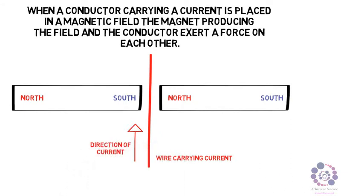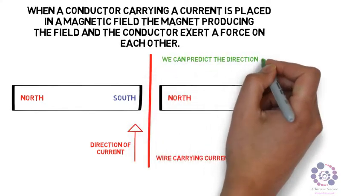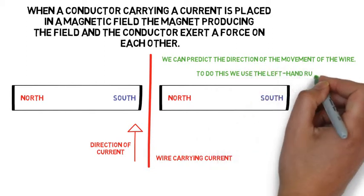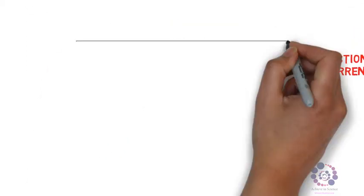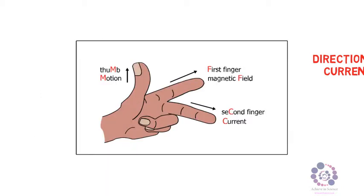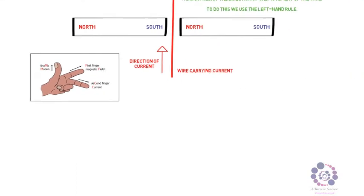Now we can predict the direction of movement of this wire, and to do this we use a rule, the left hand rule. Let's now have a look at the left hand rule. This is shown in the diagram where the thumb shows the motion, the first finger shows the magnetic field, and the second finger shows the current.